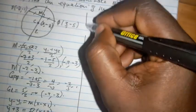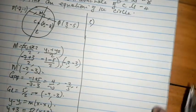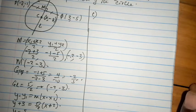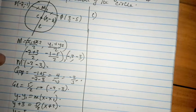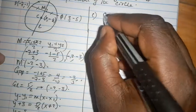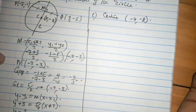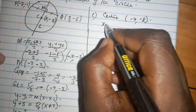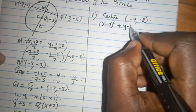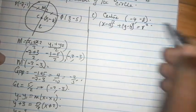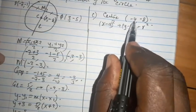Let's go to part C of the question. Part C says: find an equation of the circle. The equation of the circle is not so much of a problem because we now have the center C at (-4, -8). The equation of a circle is given by (X - a)² + (Y - b)² = R².